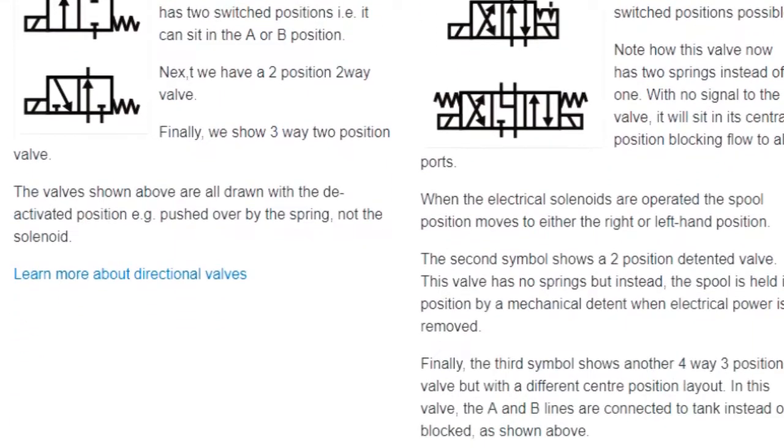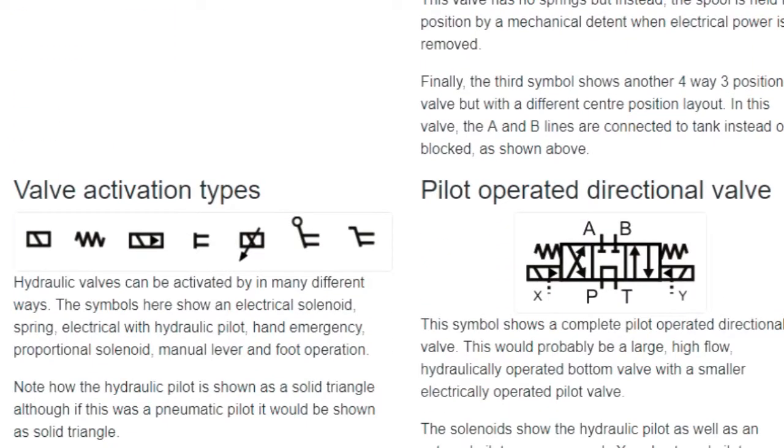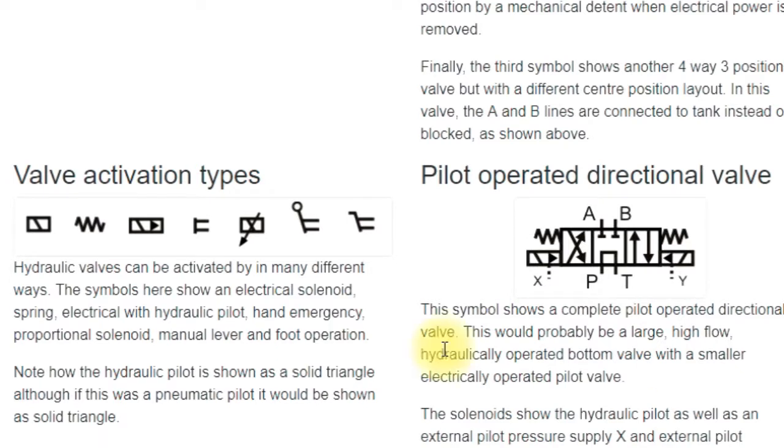So as I say, the only thing you have to be aware of is there are so many different versions. You can have electrical solenoid springs. When we see this little triangle here it means it's a pilot supply, so that will be a two stage valve. Hand operation, button operation, proportional, and manual levers.